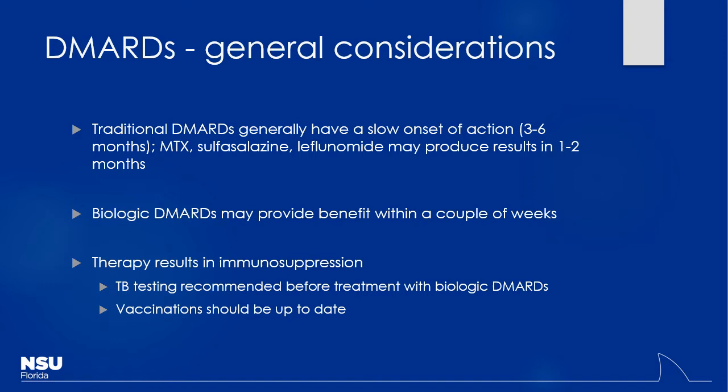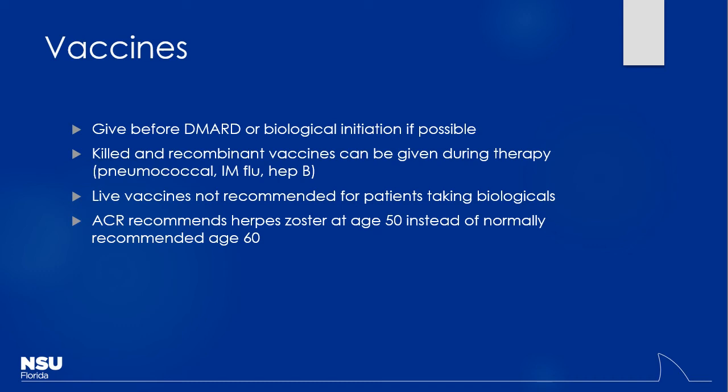You don't necessarily want to stop therapy for a vaccine because what would happen if you stopped therapy cold turkey? Probably a relapse with symptoms — a disease flare up, a lot of inflammation, maybe ending up in the hospital. Give the vaccines before DMAR therapy starts if possible. Killed and recombinant vaccines can be given during therapy — things like the pneumococcal vaccine, the intramuscular flu vaccine, and hep B are all fine. Live vaccines are not recommended. In some cases you may recommend certain vaccines earlier, like herpes zoster at age 50 instead of 60.